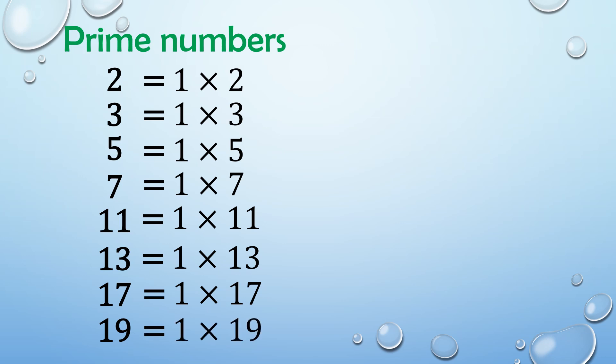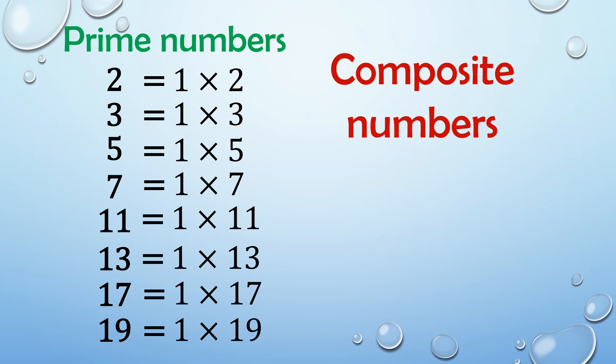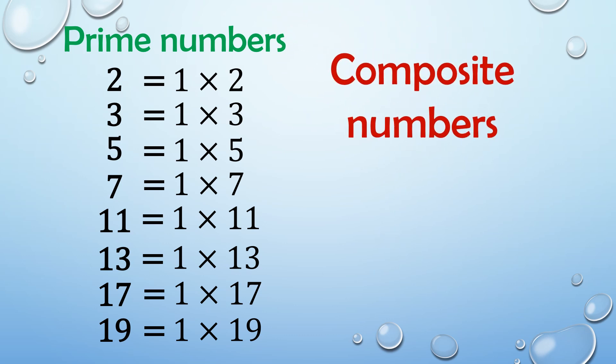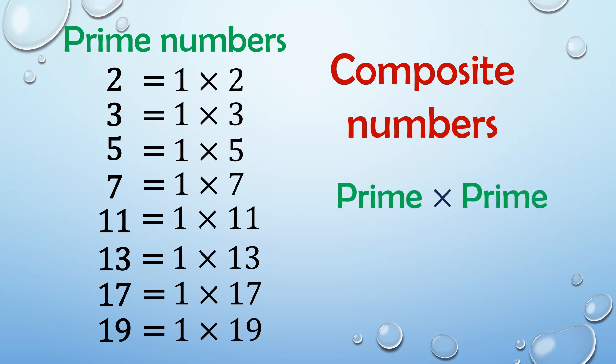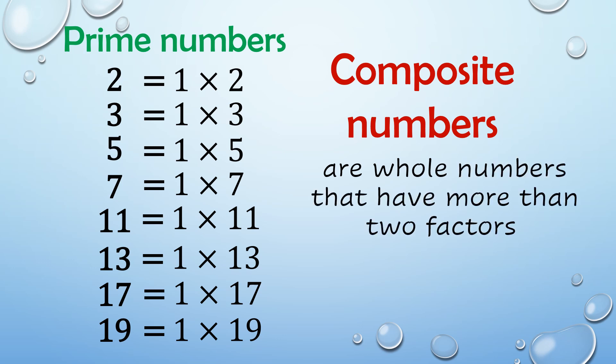There are no other factors of prime numbers other than 1 and itself. And all other numbers that are not prime are called composite numbers, because they are composed of primes. You can get them by multiplying prime and prime. So we define composite numbers as whole numbers that have more than 2 factors.